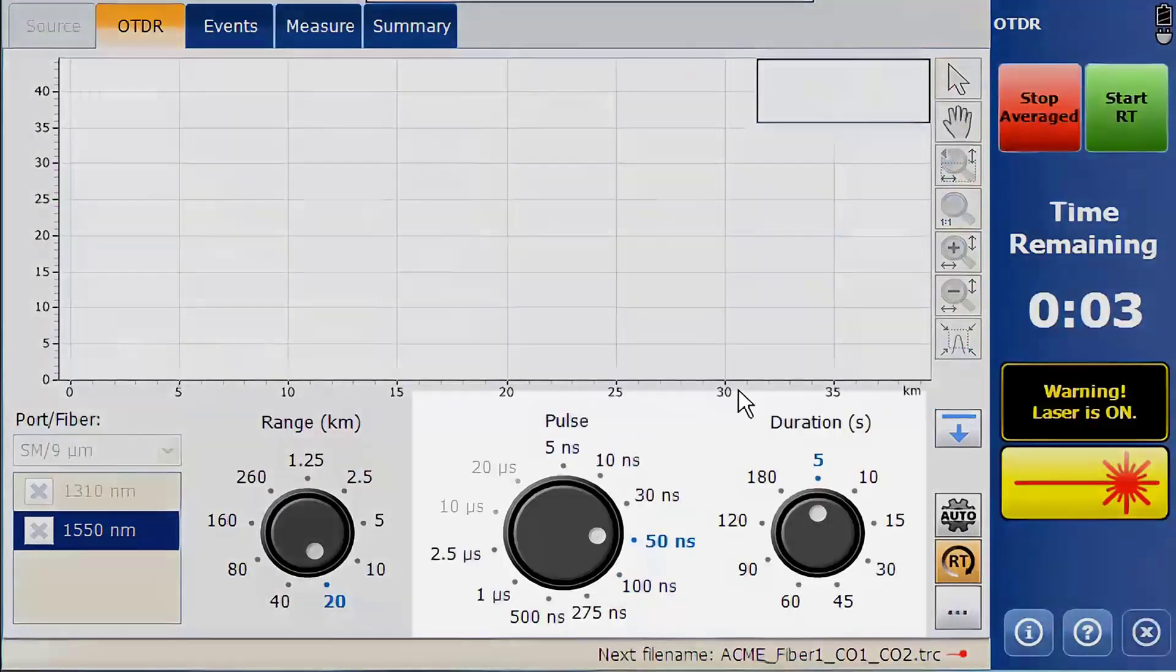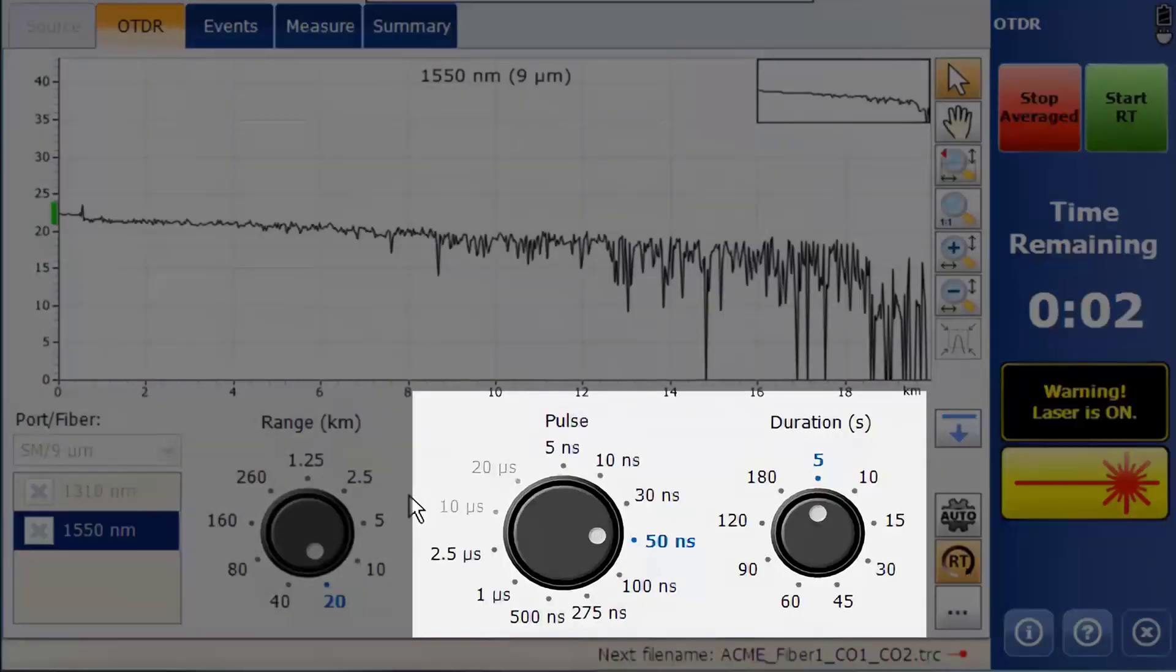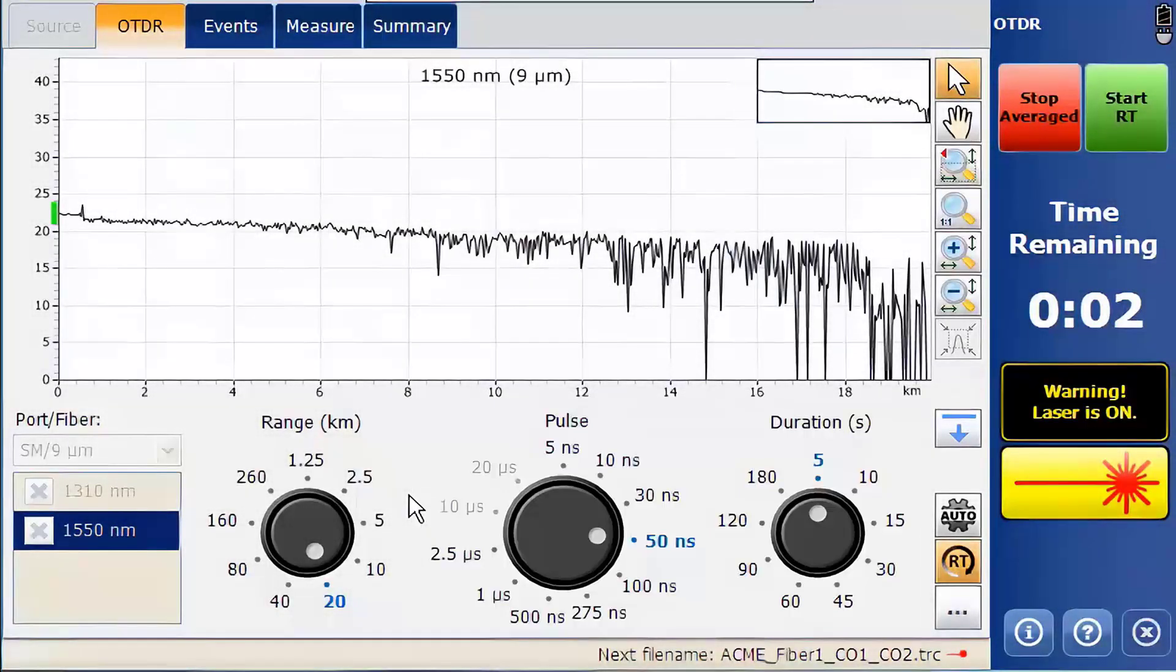Adjusting the pulse width and duration will influence the resolution, signal noise, distance which can be tested, and the testing time. For this reason, they may need to be changed from the auto mode depending on the type of test.